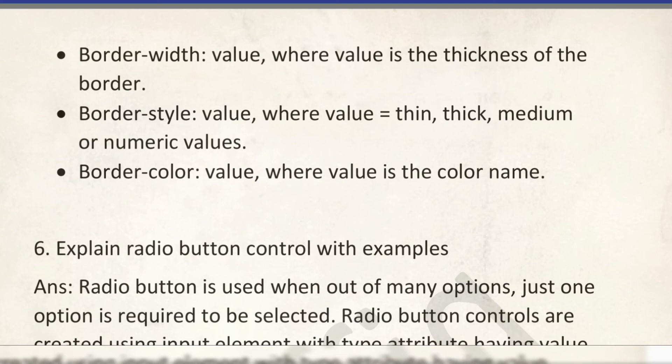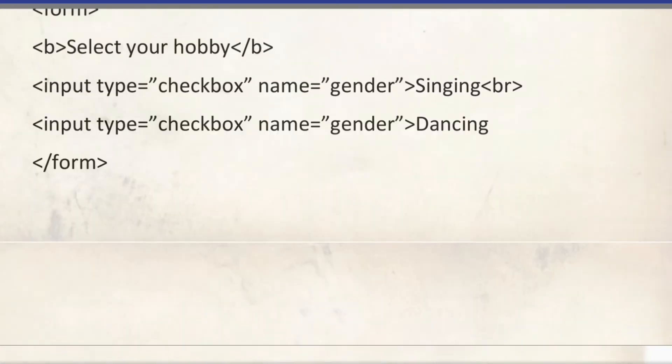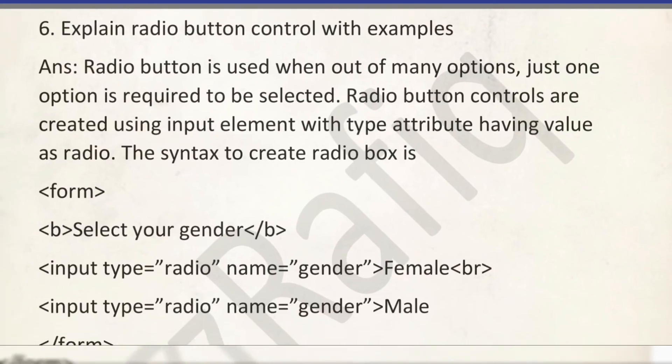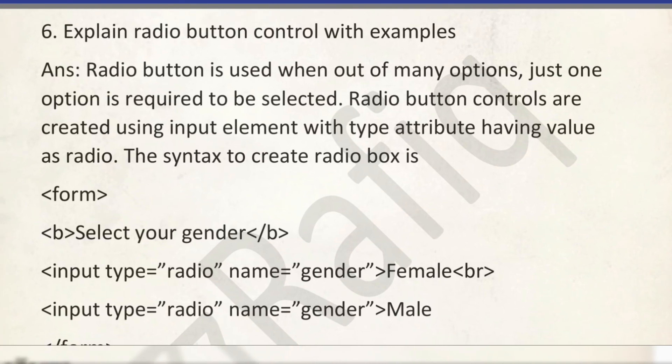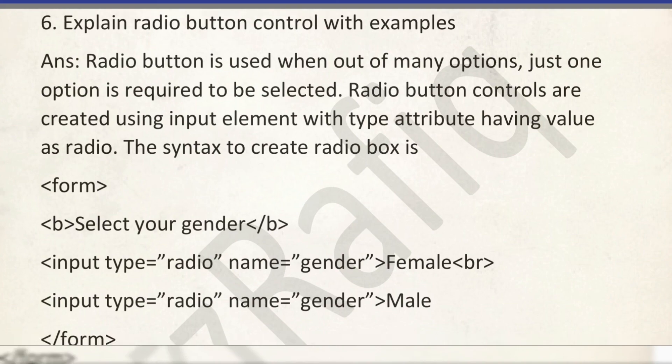Number 6: explain the radio control with an example. Radio control is used when we have to select just one option from many options. Like gender — we may have two options, male and female, and we can select just one. We cannot select both at the same time. At that situation we can use a radio button. The syntax is this one.